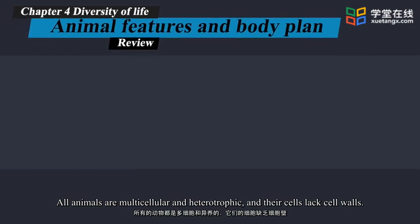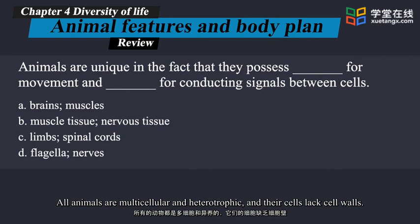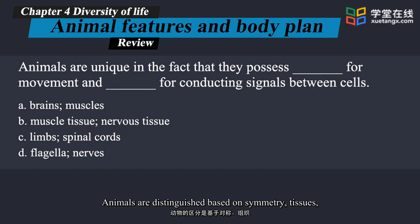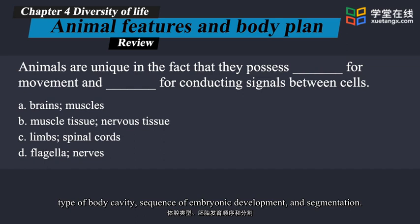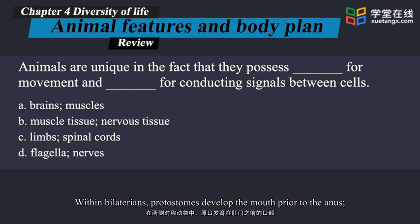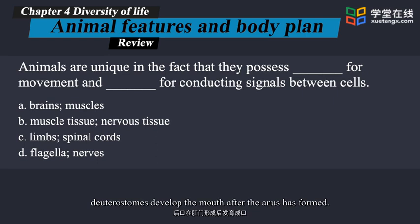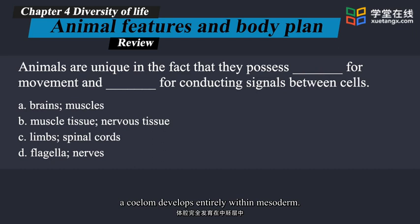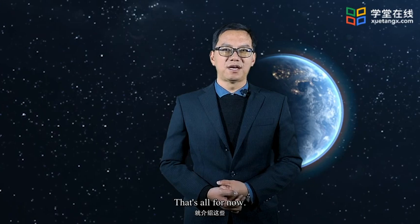All animals are multicellular and heterotrophic, and their cells lack cell walls. Most animals can move from one place to another, can reproduce sexually, and possess unique tissues. Animals are distinguished based on symmetry, tissues, type of body cavity, sequence of embryonic development, and segmentation. Within bilaterians, protostomes develop the mouth prior to the anus, while deuterostomes develop the mouth after the anus has formed. Segmentation is conducive to efficient locomotion. A pseudocoelom is a space that develops between the mesoderm and endoderm, while a coelom develops entirely within the mesoderm. That's all for now — see you next time.